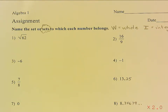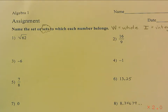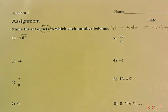Page six in your packet asks you to name the set or sets to which each number belongs. The possible options are W for whole number, I for integer, R for rational, or IRR for irrational.